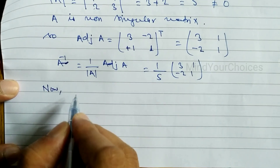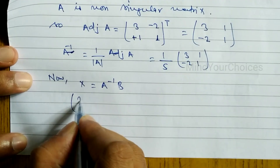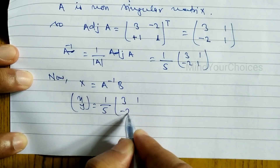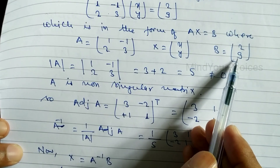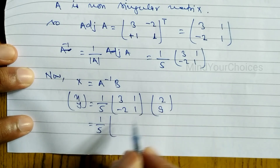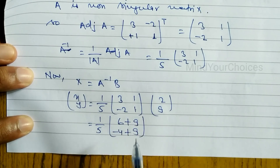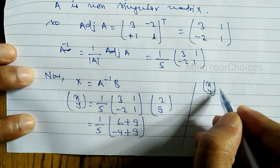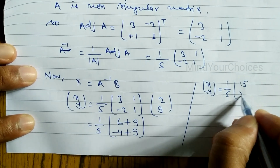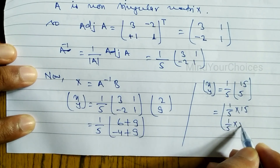Since X equals A inverse times B, we have [x; y] equals one-fifth times [3, 1; -2, 1] times [2; 9]. Multiplying: three times two is six, plus one times nine is nine, giving fifteen. Then minus two times two is minus four, plus one times nine is nine, giving five. So [x; y] equals one-fifth times [15; 5], which equals [3; 1].